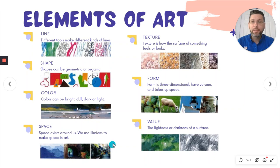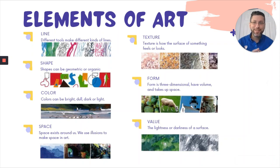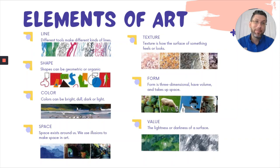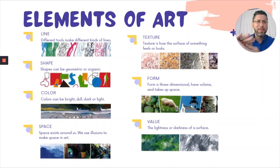Another element of art is space — that's the area that exists around us. In art we use illusions, like magicians, to make things look like they're close and far away. The element we'll focus on today is texture, and that's how the surface of something looks or feels to the touch. For example, the carpet across from me looks very soft — if I touched it, it would feel soft and maybe a little bumpy.